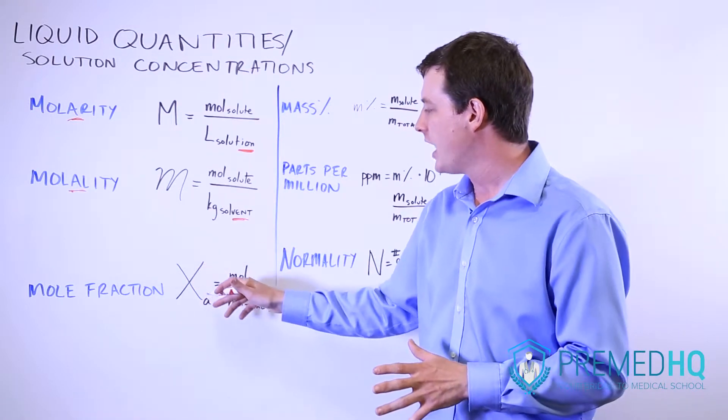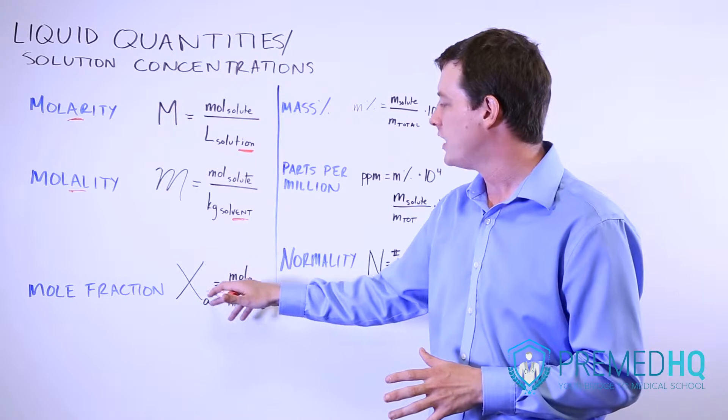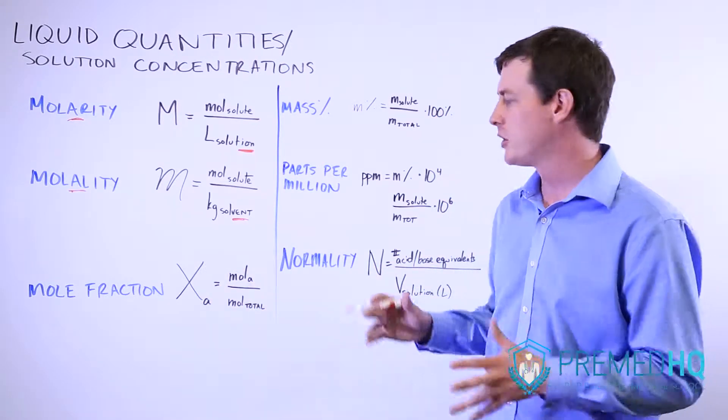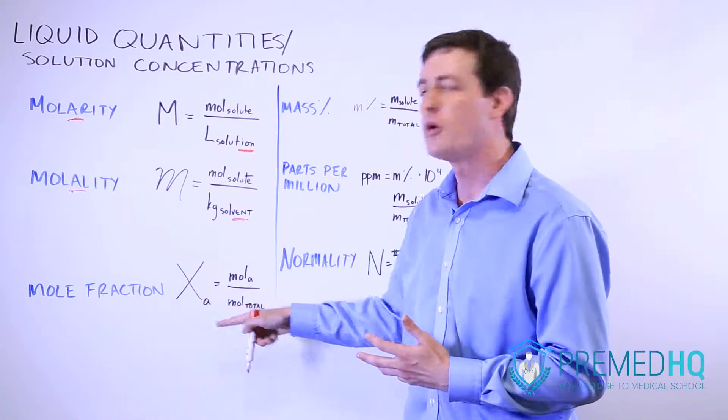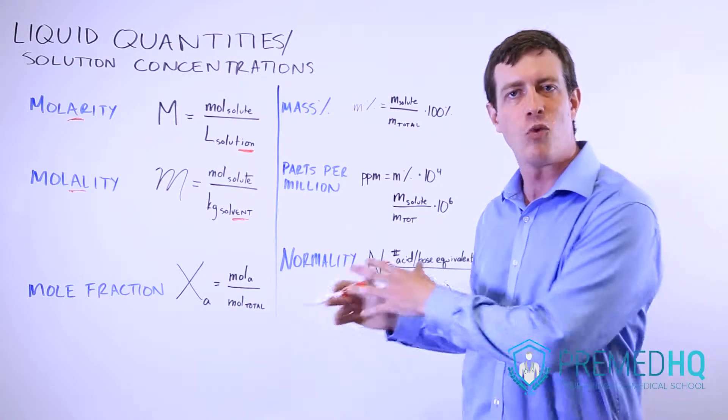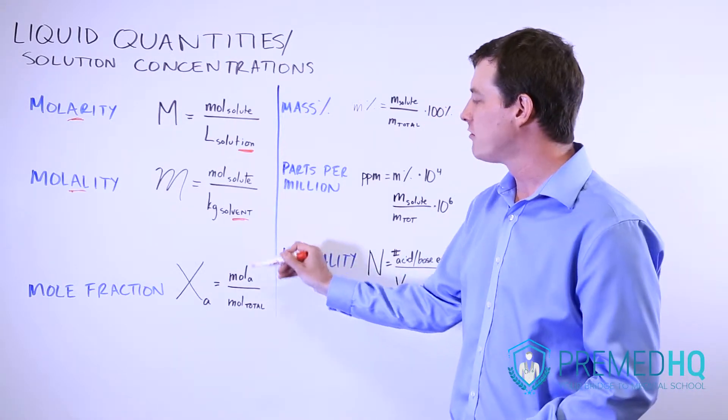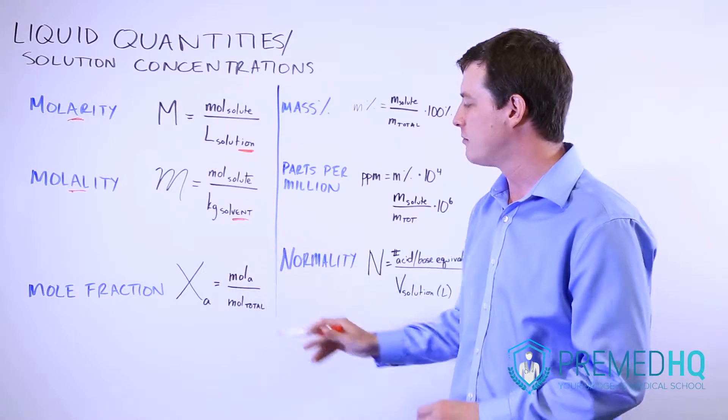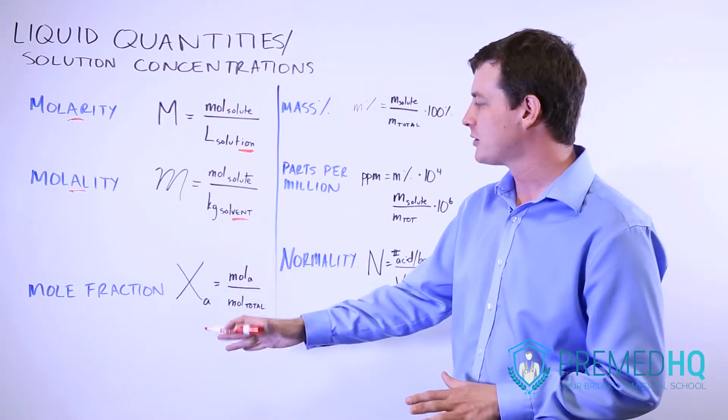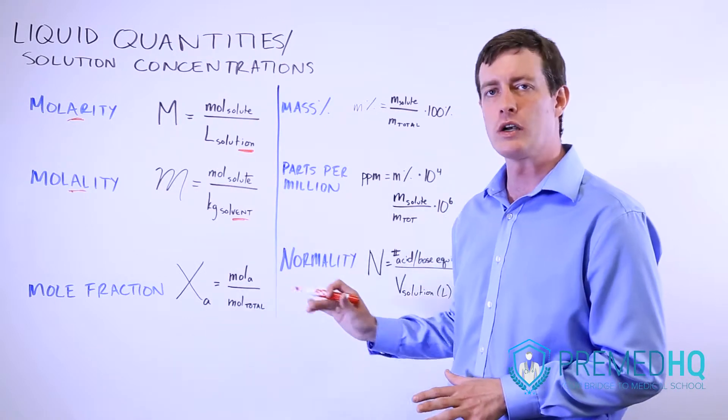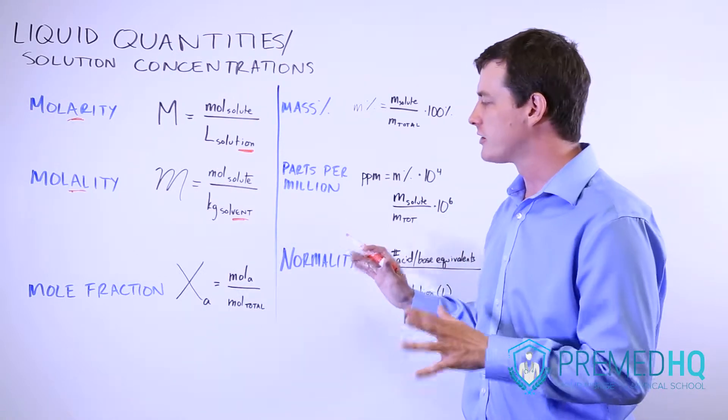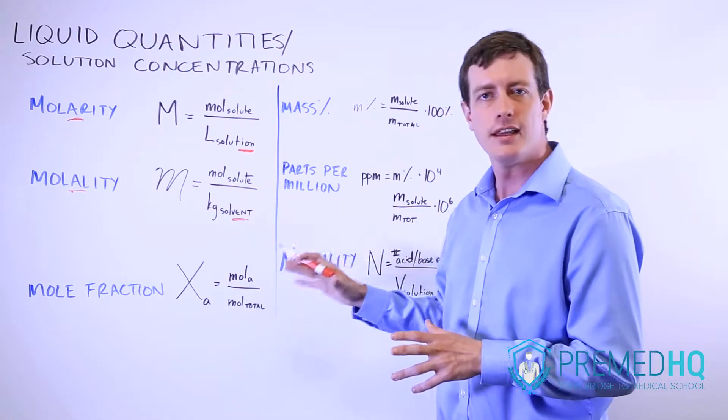It's depicted with a capital X and usually some subscript depicting what mole fraction we're looking at, so it could be mole fraction of sodium or a mole fraction of water or something like that. It's simply a ratio of the number of moles of this material over the number of total moles, and mole fraction will range from zero to one where one is a completely concentrated thing that is only that material.